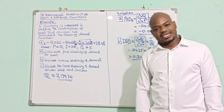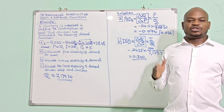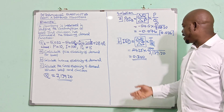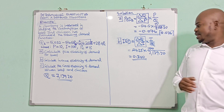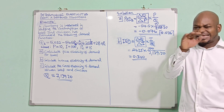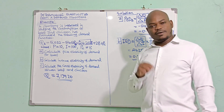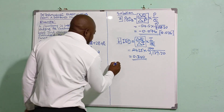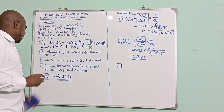For example, even if you double someone's income from $1,000 to $2,000, their consumption of beef is not going to double — meaning people tend to consume almost the same levels of beef, with only a slight change in kilograms purchased.